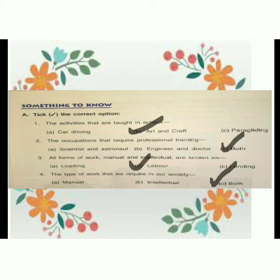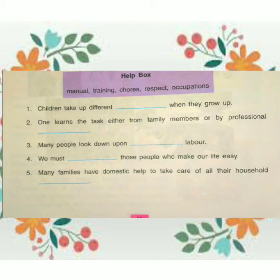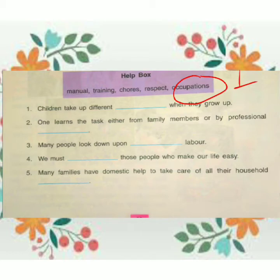Next is fill in the blanks. The help box is given: manual, training, chores, respect, and occupation. First blank: Children take up different dash when they grow up. Answer: Children take up different occupations when they grow up. The answer is occupations.